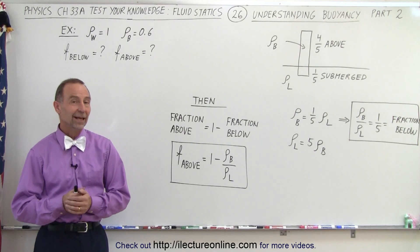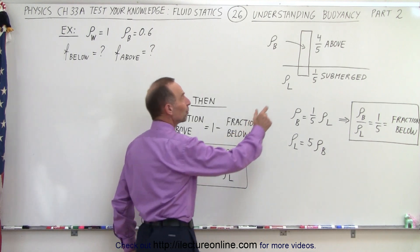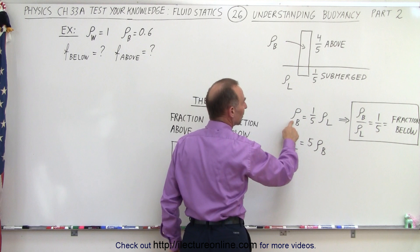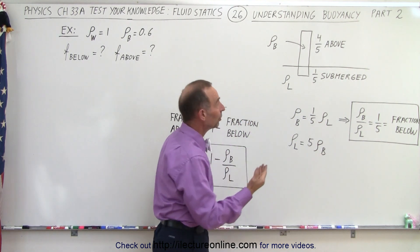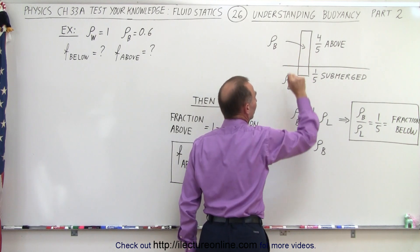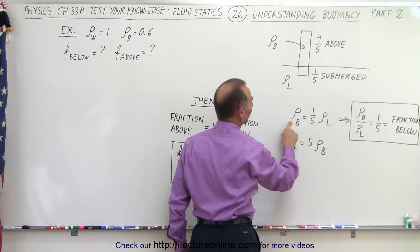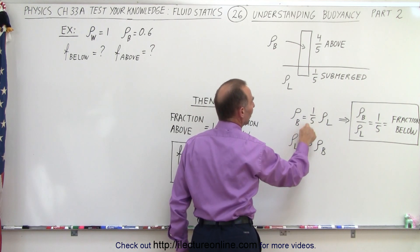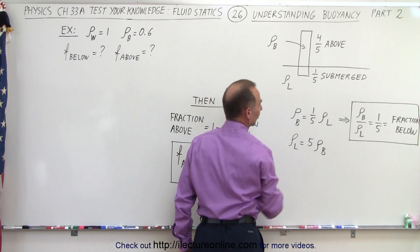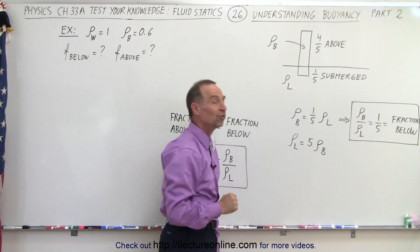Welcome to our lecture online. In the previous video we saw examples where an object was partially submerged and found the relationship between the density of the object and the density of the liquid. For example, if one-fifth of the object is below the surface and four-fifths is above, the density of the object equals one-fifth times the density of the liquid, or the density of the liquid is five times the density of the object.